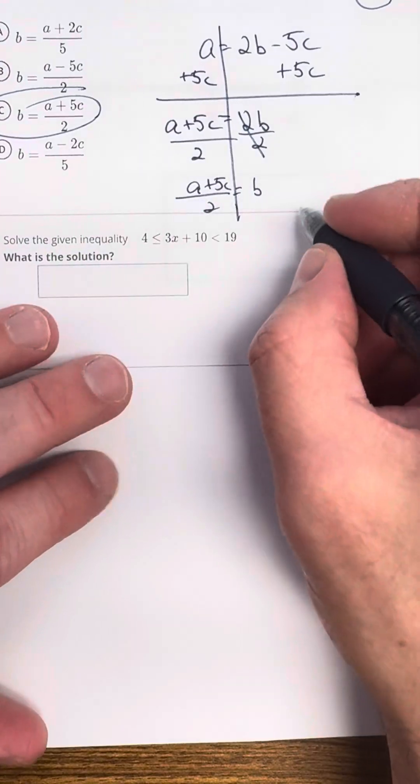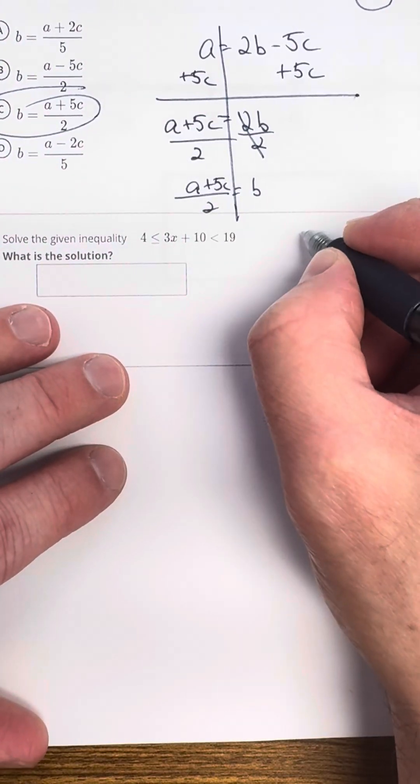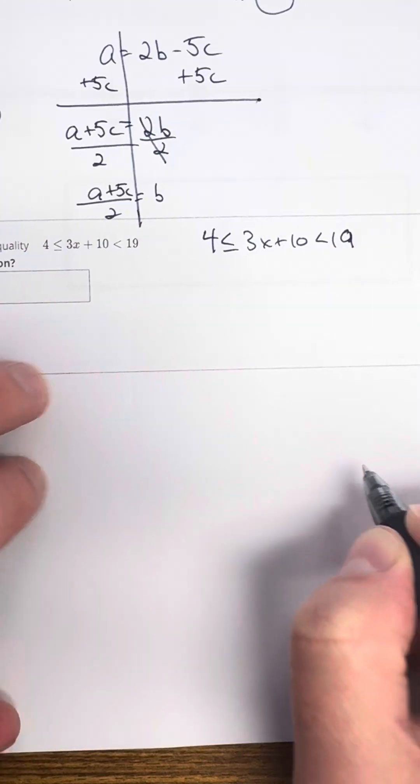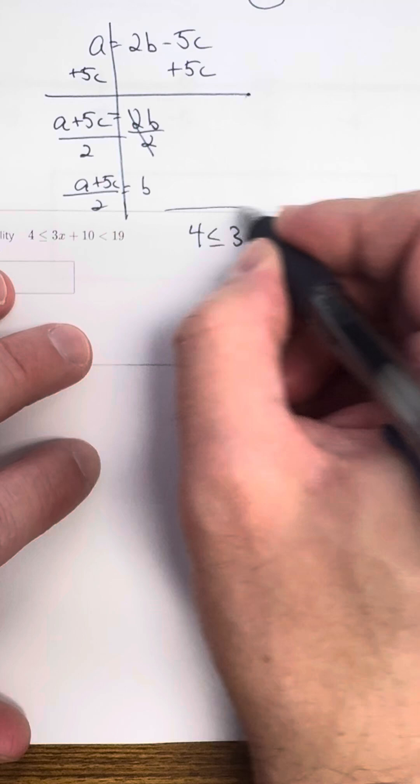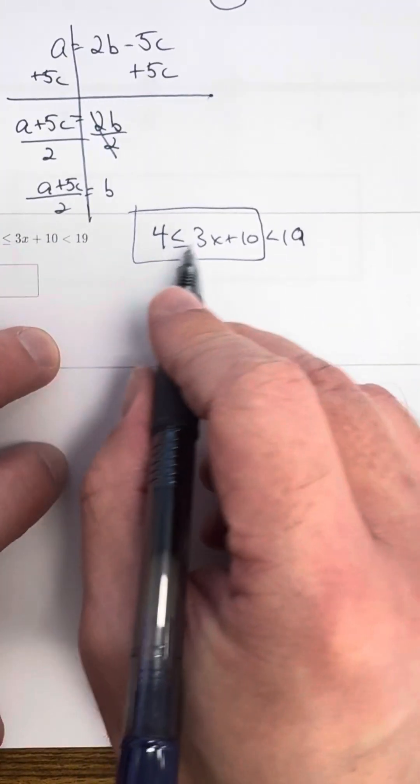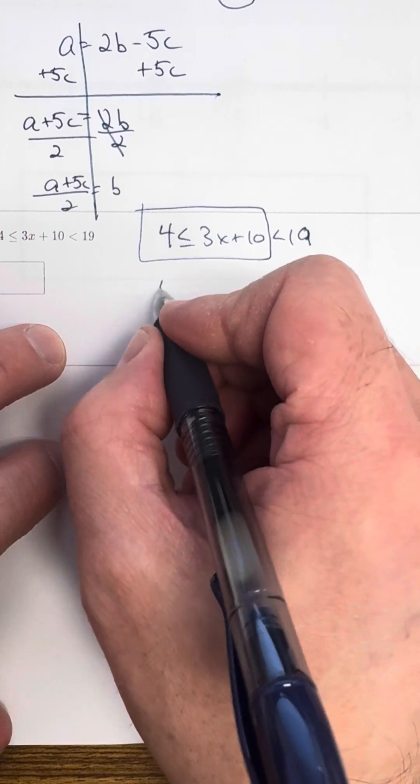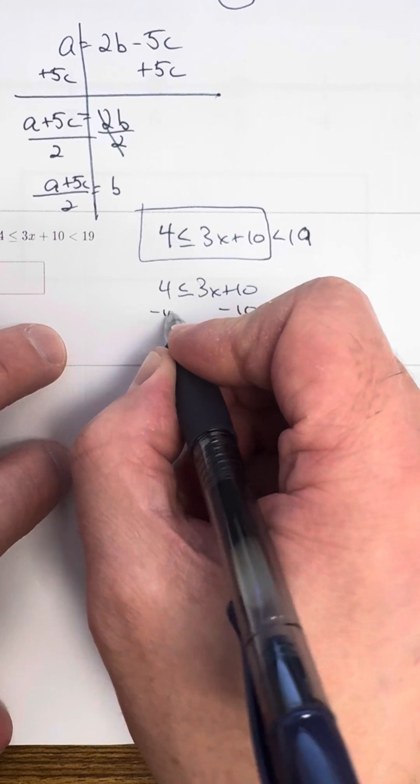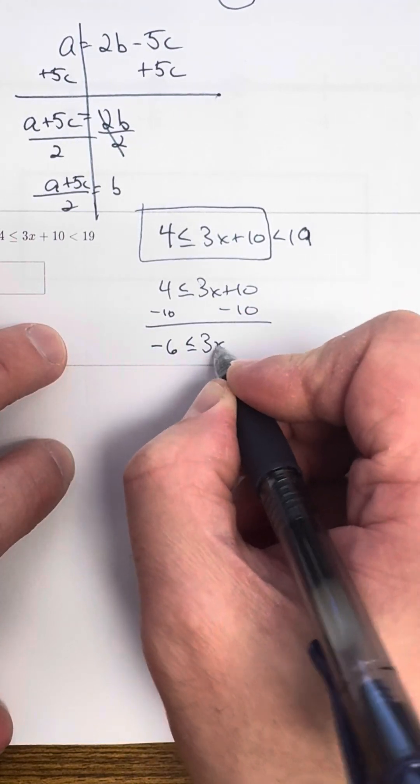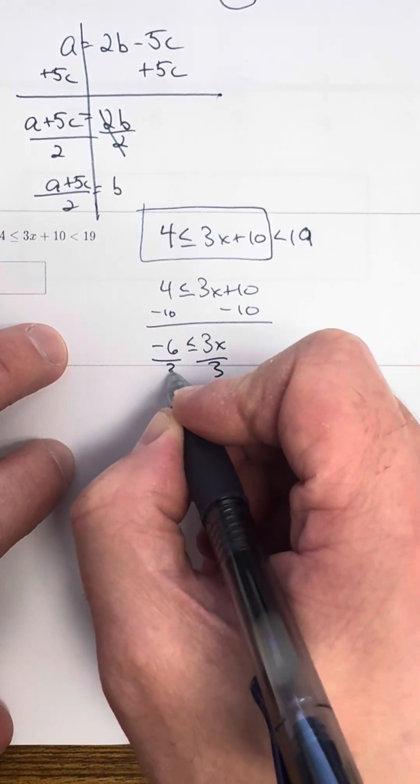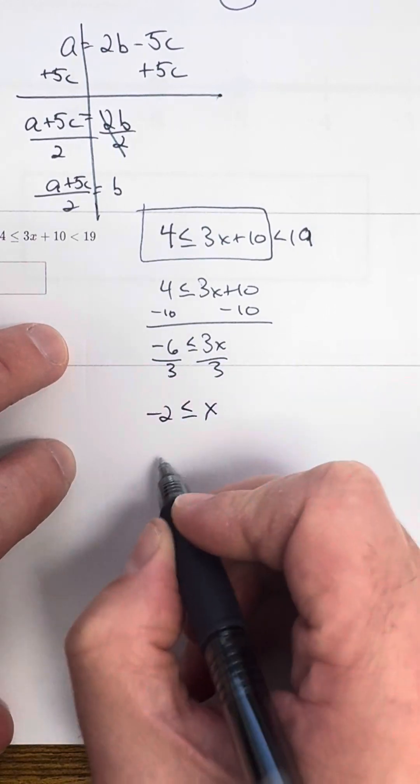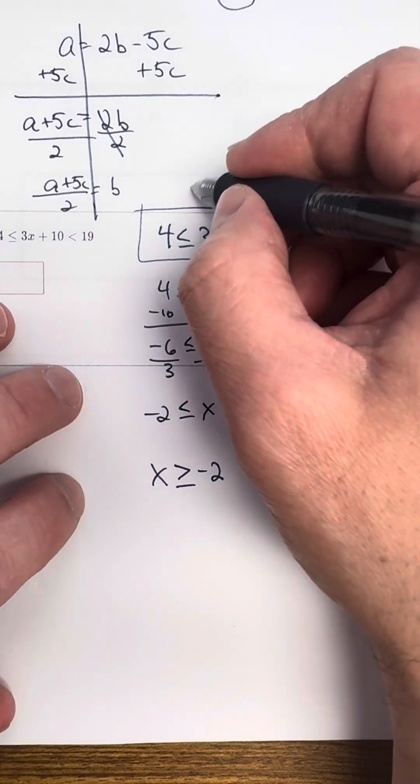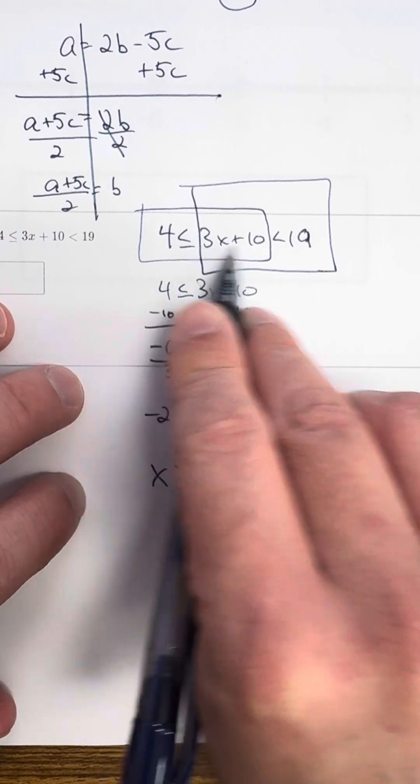All right, last one. Solve the inequality. What is the solution? Okay, so let's go ahead. This is a compound inequality, so I'm going to rewrite it. So let's box this. I like to box it, so I'm going to take this first. And again, I'm only boxing it to the second inequality sign. So I'm going to have 4 is less than or equal to 3X plus 10. Subtract 10 on both sides. Negative 6 is less than or equal to 3X. Divide by 3 on both sides. I'm going to have negative 2 is less than or equal to X. Reversing this gives me X is greater than or equal to negative 2.